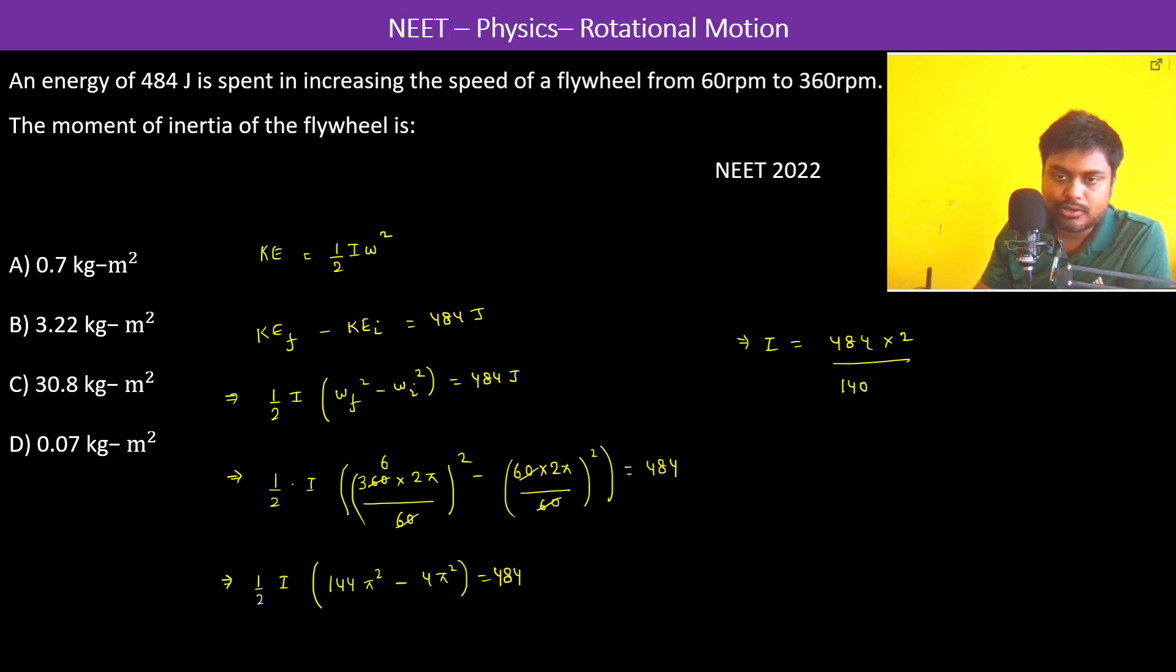I becomes 484 into 2 divided by 14 into π², which is equal to, this becomes 70, so this is 484 divided by 700.